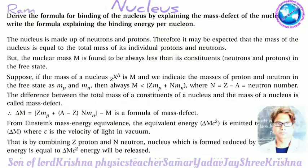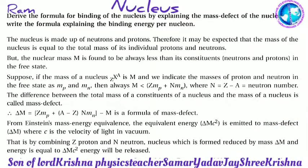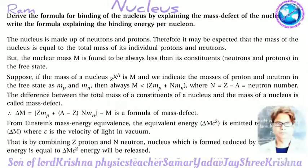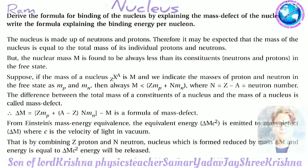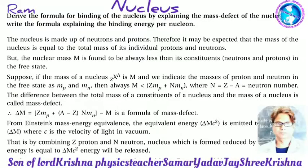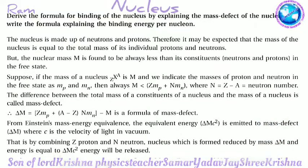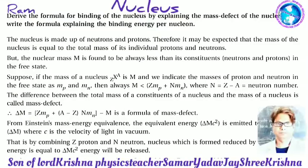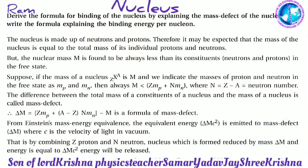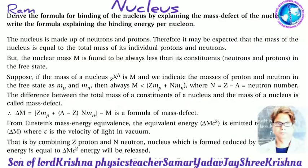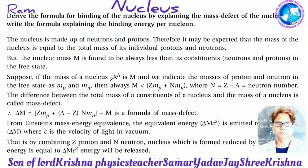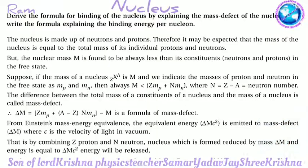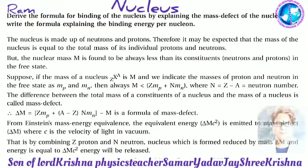The difference between the total mass of the constituents of the nucleus and the actual mass of the nucleus is called mass defect. ΔM = Z·mp + (A − Z)·mn − M.